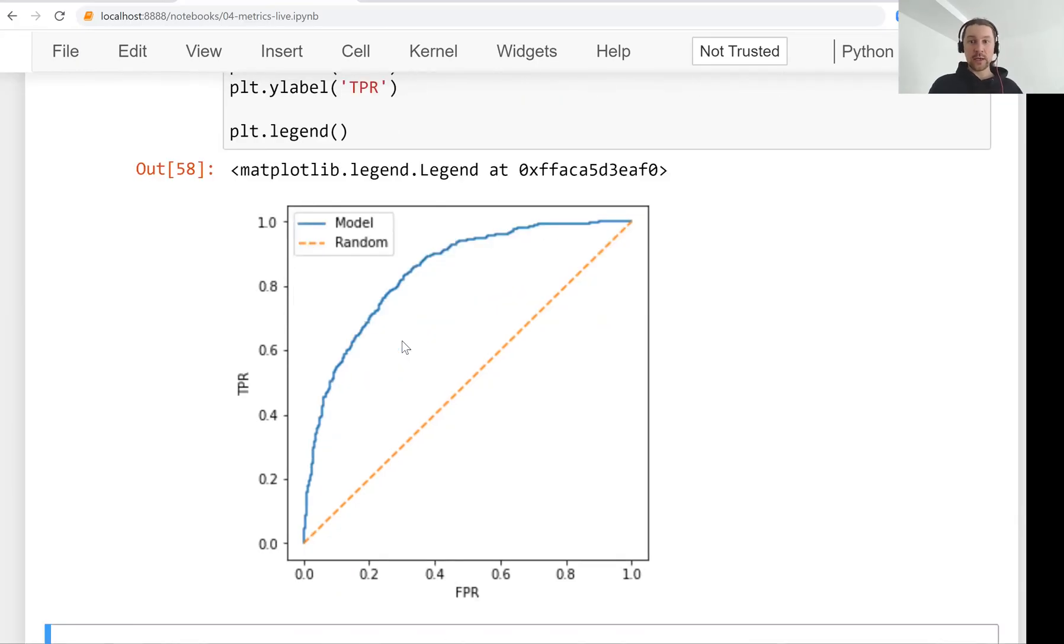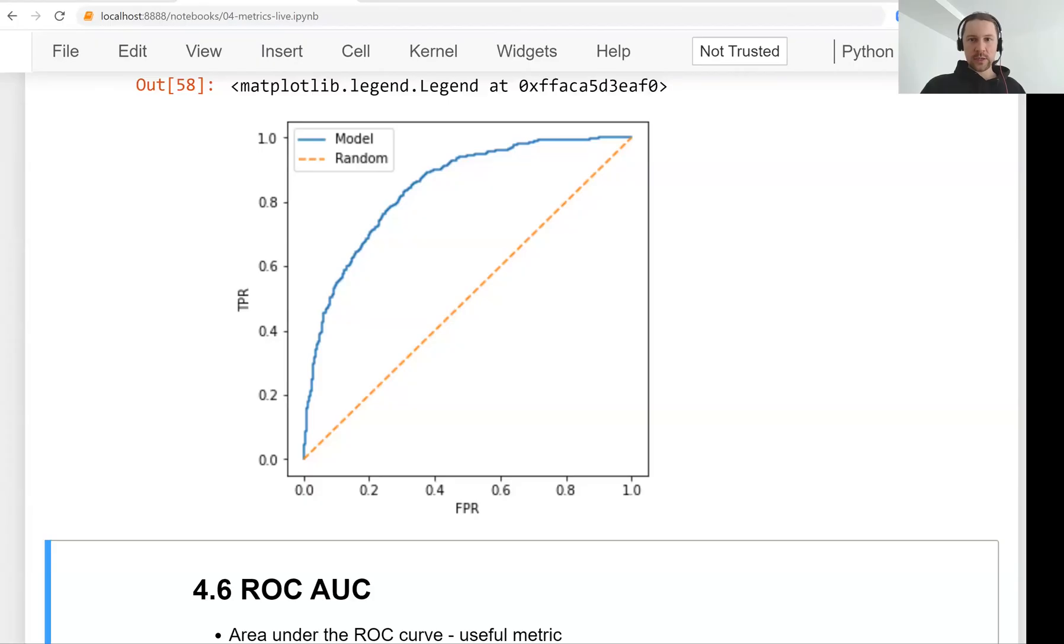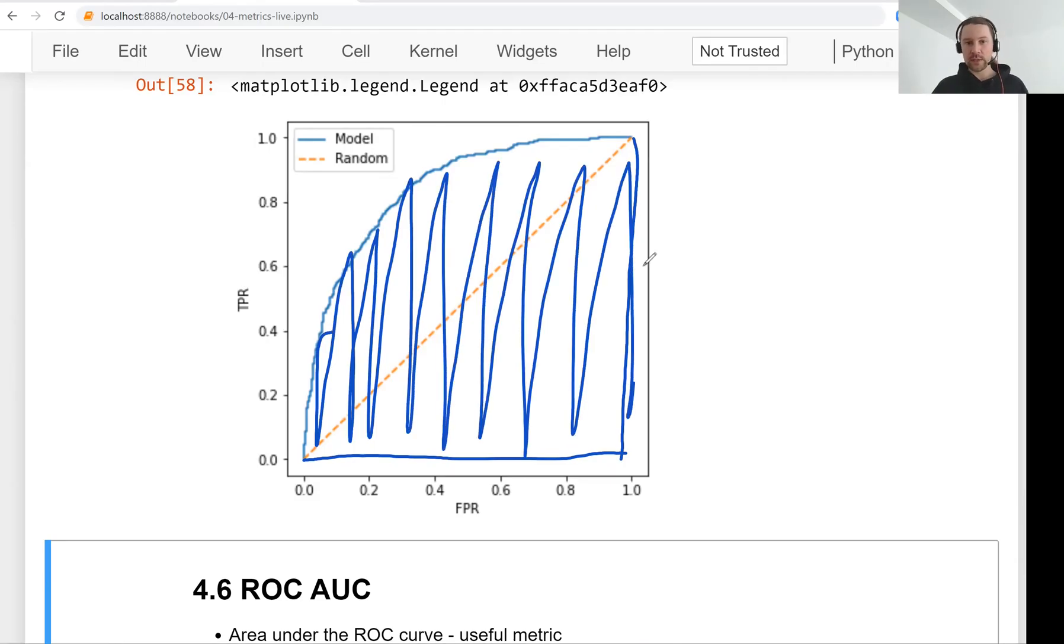So this is how we can actually use scikit-learn for drawing the ROC curve. We don't need to do this manually. And as I promised, in the next lesson we will look at the area under the ROC curve, which is a good metric for evaluating binary classification models. So see you soon.